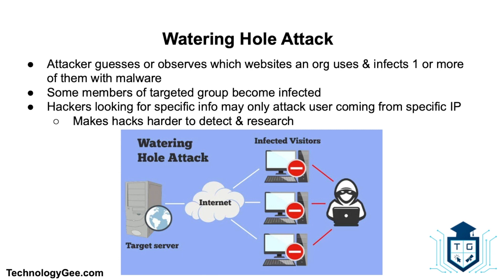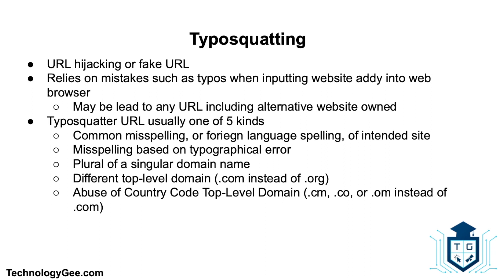Next is a watering hole attack. This is a computer attack strategy in which an attacker guesses or observes which websites an organization often uses and infects one or more of them with malware. Eventually some members of the targeted group will become infected. Hackers looking for specific information may only attack users coming from a specific IP address, which also makes the attacks harder to detect and research.